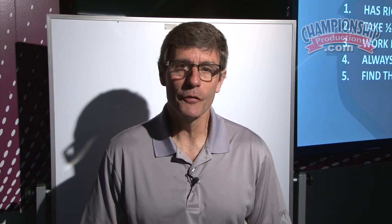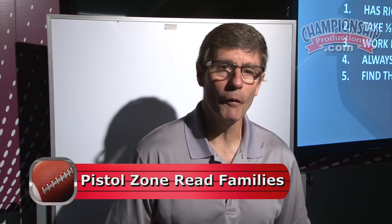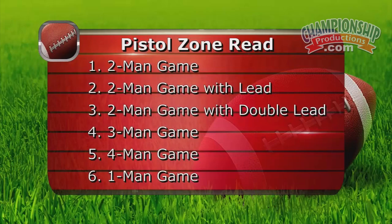We will start out with the six zone read families. The first family is the two man game, the second family is the two man game with a lead, and we got a two man game with a double lead, and we got three man game, and we got four man game, and then we got one man game.